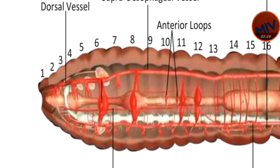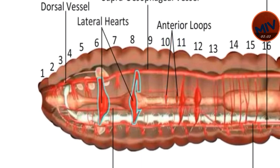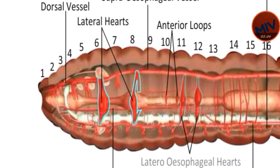An earthworm has two pairs of lateral hearts and two pairs of lateroesophageal hearts. One pair is present in each of the 7th, 9th, 12th, and 13th segments. The valves of the hearts allow the flow of blood from the dorsal vessel to the ventral vessel only.